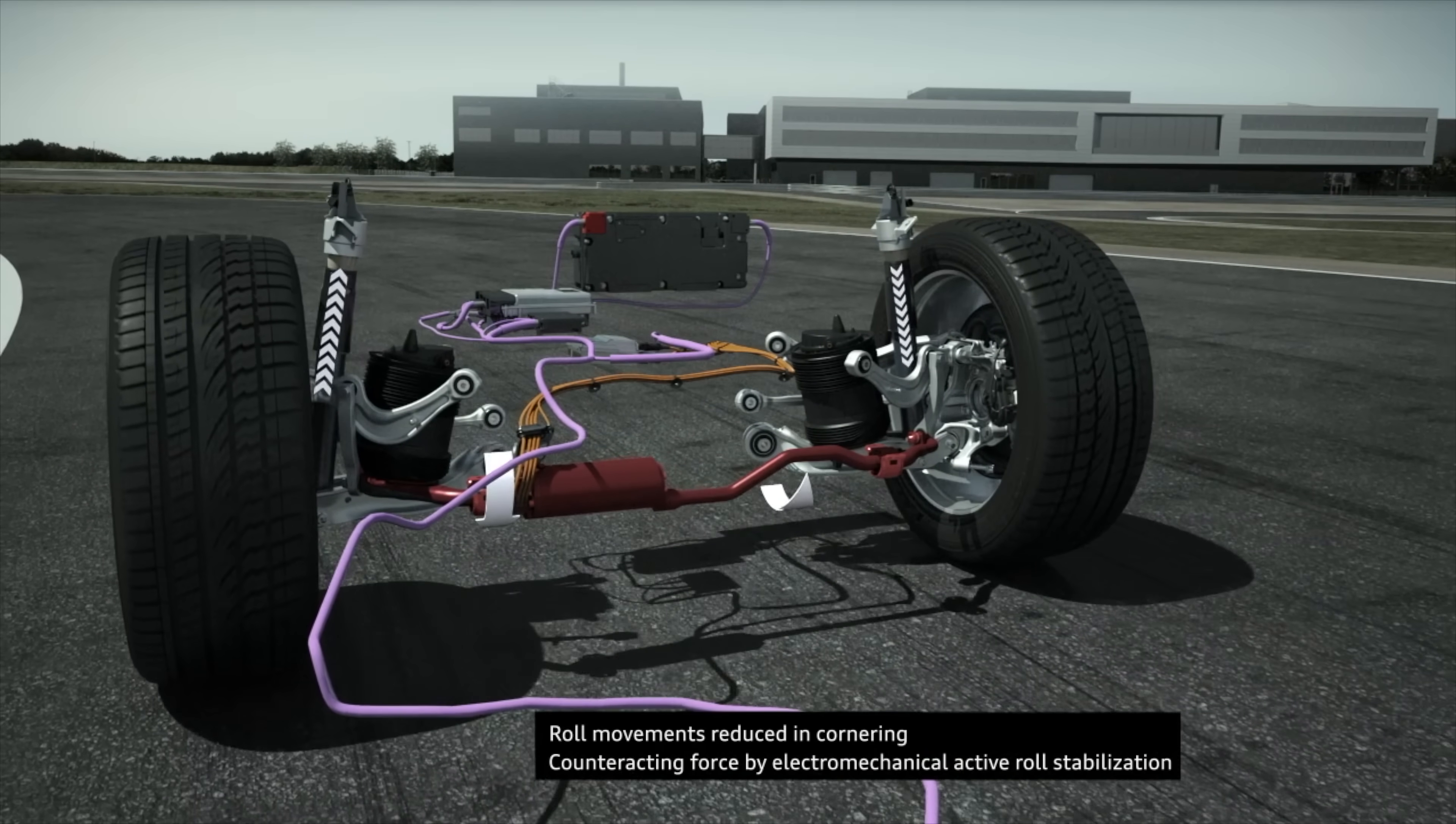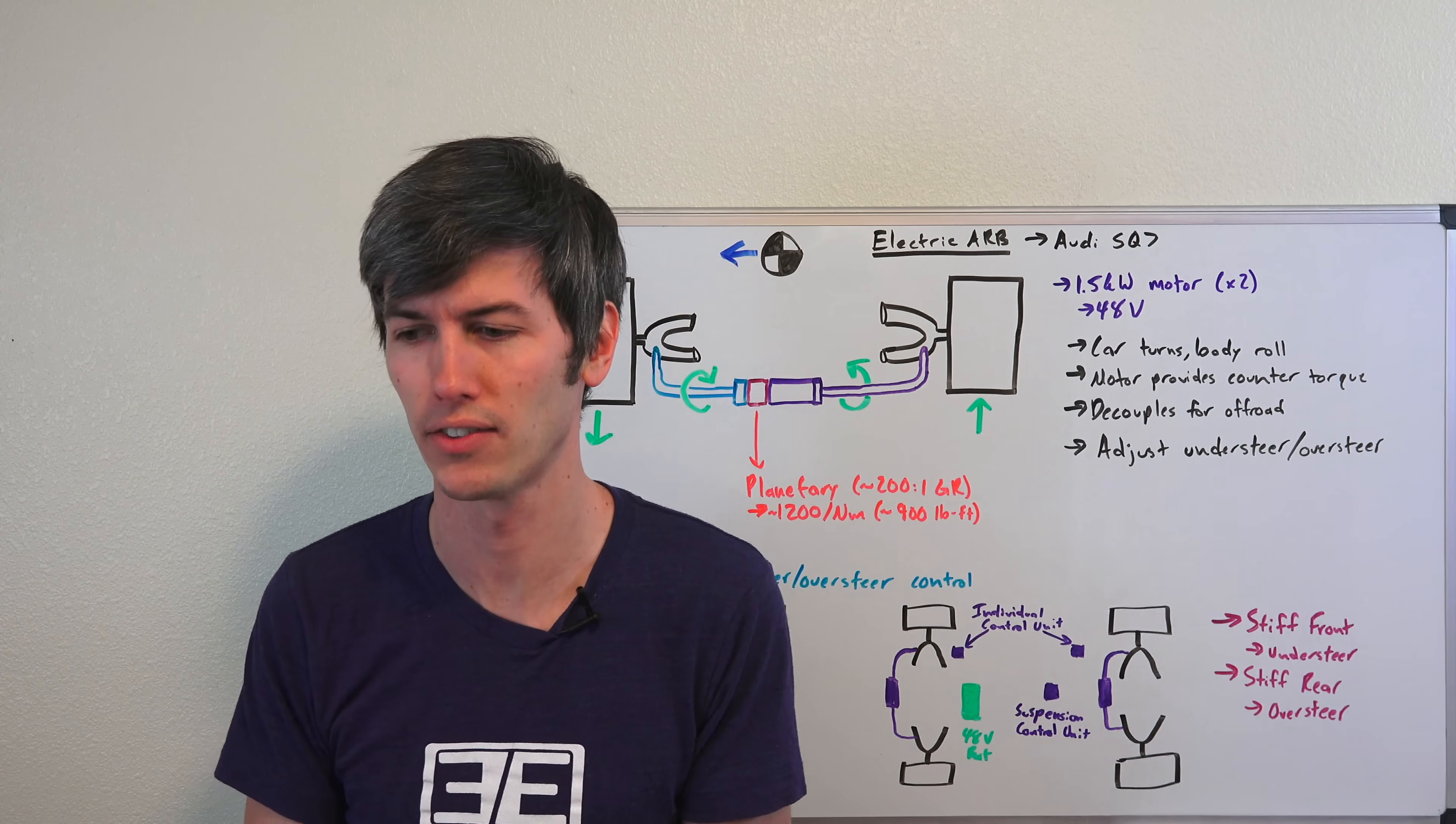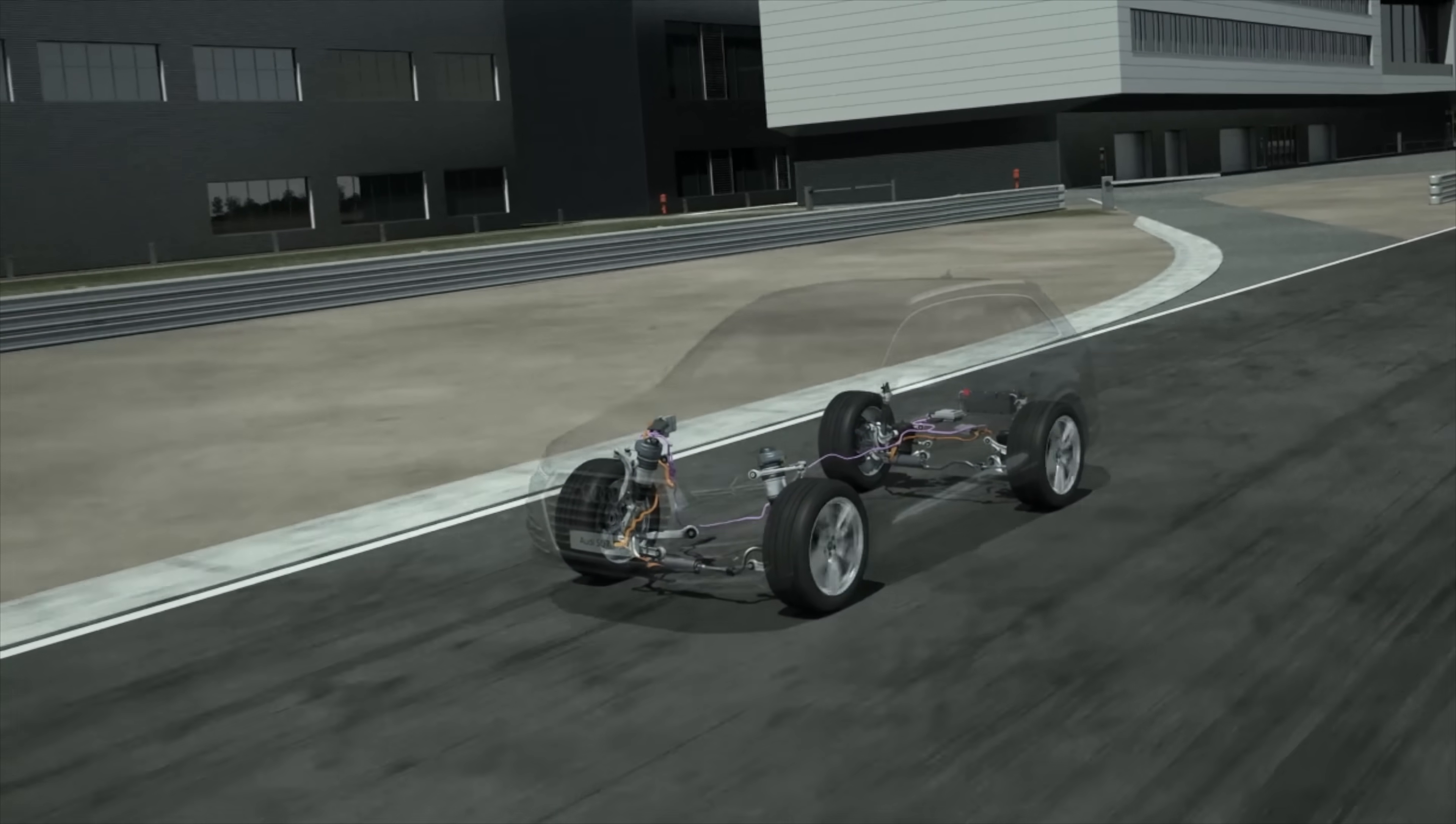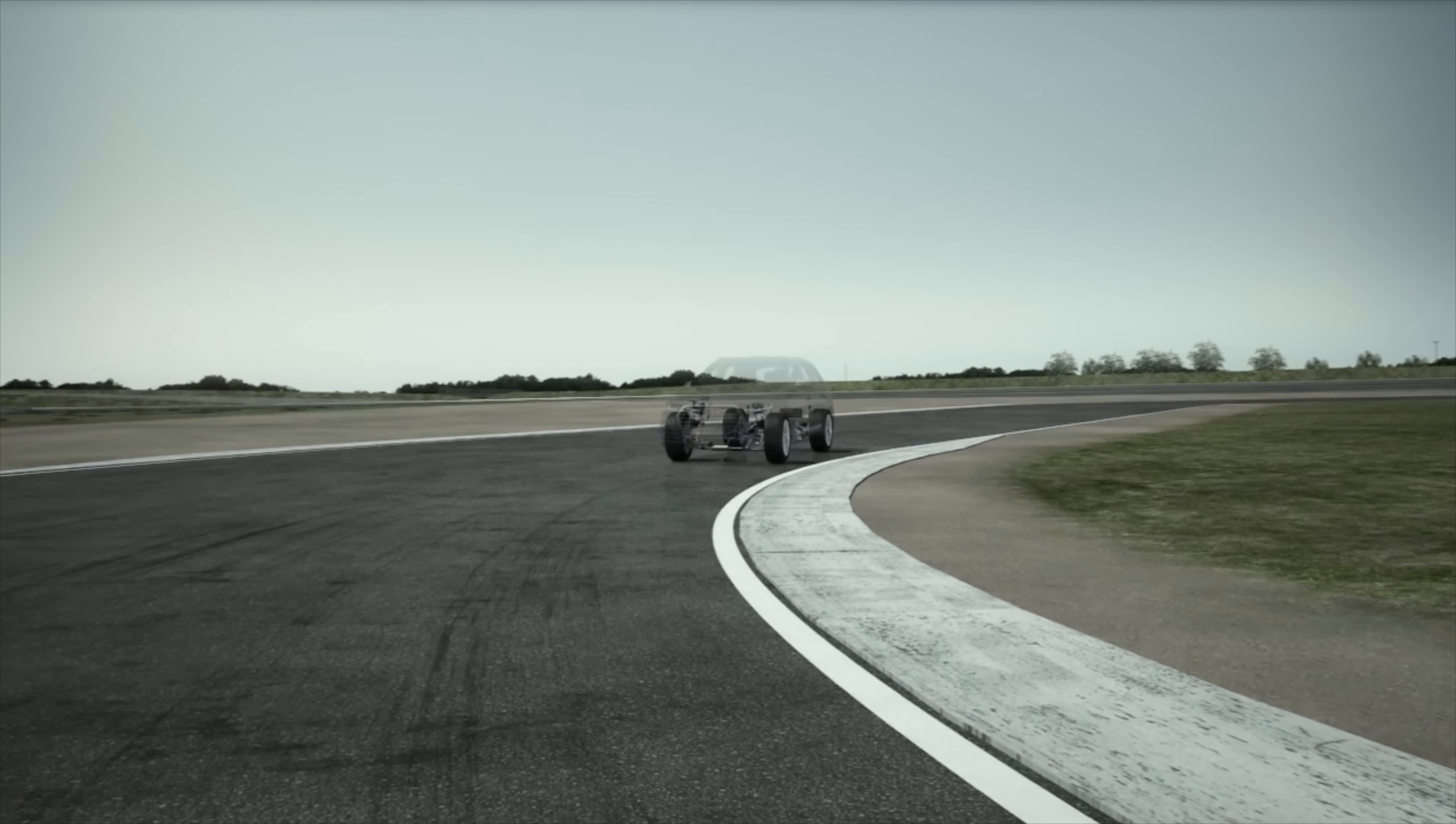It's looking at the steering angle from the driver's input as well as the vehicle speed. It's not using an accelerometer because that would be reacting too late to the g-forces—the roll would have already occurred. So it's looking at the steering input and vehicle speed, then predicting how much torque it needs to keep the car flat through the corner.